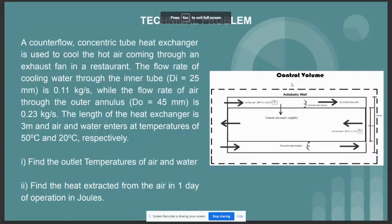Hello, my name is Sharnam Faria. I'll be explaining the following parts. First, the technical problem. A counterflow concentric tube heat exchanger is used to cool the hot air coming through an exhaust fan in the restaurant. The flow rate of the cooling water through the inner tube is 0.11 kilograms per second, while the flow rate of the air through the outer annulus is 0.23 kilograms per second.